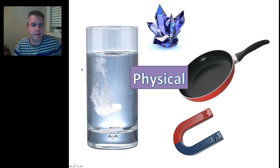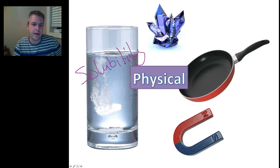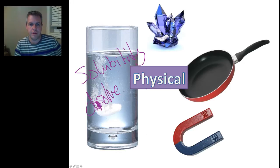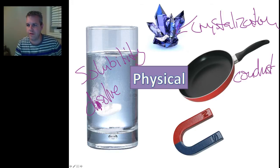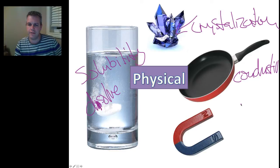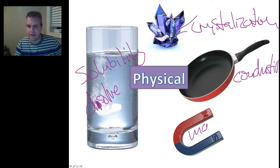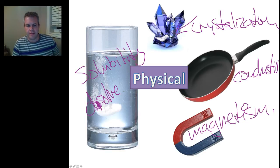The chemical makeup of it is not changed, but the physical appearance of it is changed. When we look at this set of physical properties, we have solubility, and that is the ability to dissolve in something. Here is whether it forms a crystal, so crystallization, and here is conductivity, and then, of course, over here is whether it is magnetic, so magnetism.